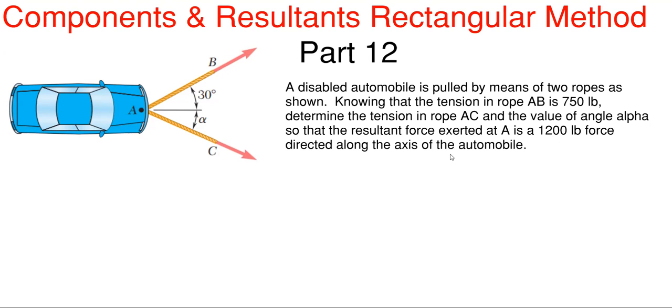So what we really have going on here, for some reason we have two people pulling this car, but for some reason they're not deciding to pull it right down the middle. They are pulling at some kind of angle here. So we have AB and we are told that this is 750 pounds. We do not know what AC is and we do not know what this angle is, but the value of AC and this angle are such that the resultant force between these two ropes is 1200 pounds and it's directed along the horizontal axis.